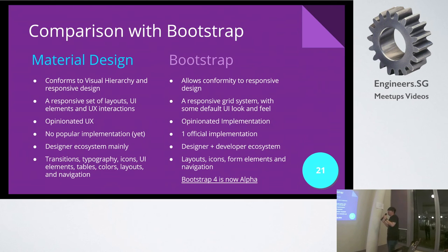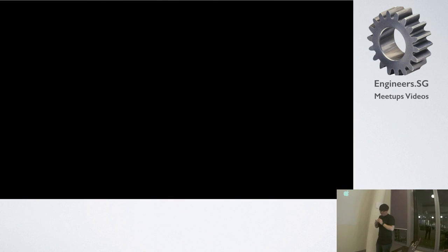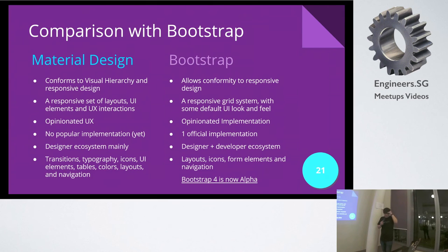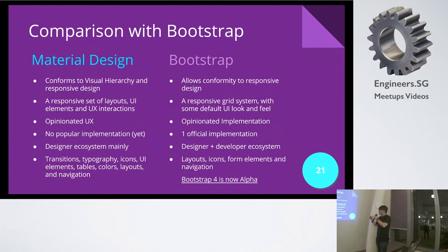Material design does not have a popular implementation yet. There is Materialize CSS, there is Material Lite from Google, but there's only one official implementation from Twitter for Bootstrap. At the moment, material design is more of a designer ecosystem, whereas Bootstrap has a lot more designer themes, plugins, jQuery, and all sorts of things. The only few plugins I see targeted for material design involve React.js, which kind of works hand in hand because of the fixed UX and fixed UI concept — React.js is naturally suited for that. Having said that, Bootstrap 4 is now in alpha, so check it out as well.